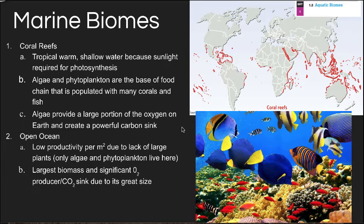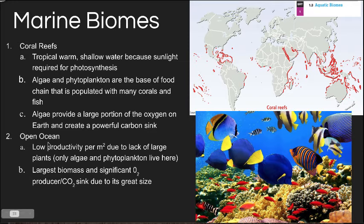Marine biomes are saltwater biomes. Coral reefs are typically warm, shallow ocean areas where plenty of sunlight is required for photosynthesis. The red areas on the ocean map indicate coral reefs, populated with algae, phytoplankton, and corals that use the sun's energy to photosynthesize. This supports high biodiversity including many fish species. Algae provides a large portion of Earth's oxygen and acts as a powerful carbon sink, absorbing carbon dioxide from the atmosphere.